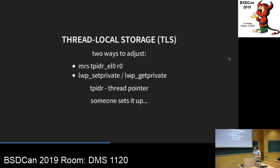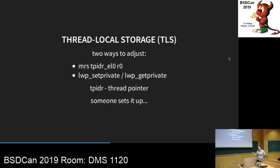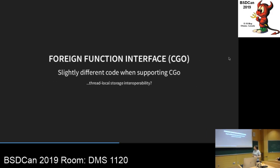Who sets up the thread pointer? To write it, you have two methods: the architecture-specific way using TPLDRL instruction, or using a syscall like set_tls/get_tls. You can use the syscall approach and don't need the architecture-specific instruction. TPLDRL is the thread pointer — who sets it up? It wasn't being set up. Also, if a goroutine can call a C function, who owns the thread pointer? How do you cooperate with C code?